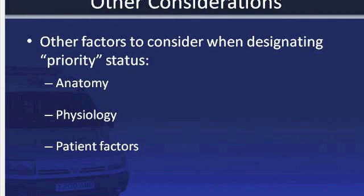Although mechanism of injury is important, it is not the only factor to consider when assessing a trauma patient and determining whether or not they are a priority patient. For some patients, the risk of significant injury is increased because of their age or pre-existing medical conditions, despite what might appear to be a minor mechanism of injury. In some EMS systems, other factors considered in addition to the mechanism of injury include anatomy, physiology, and patient factors.